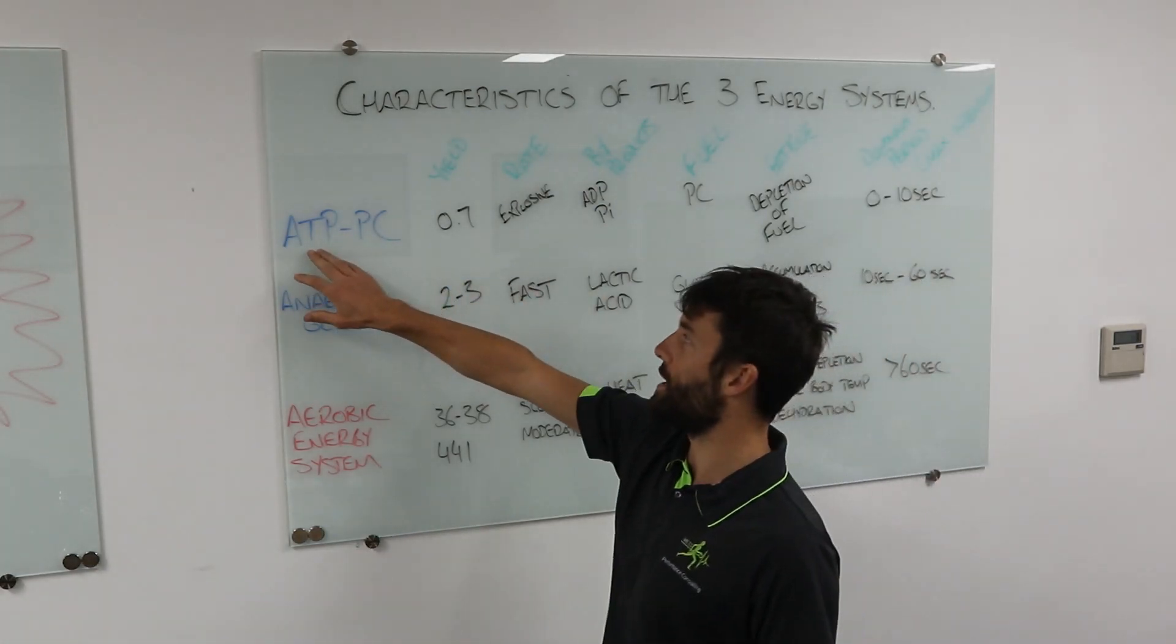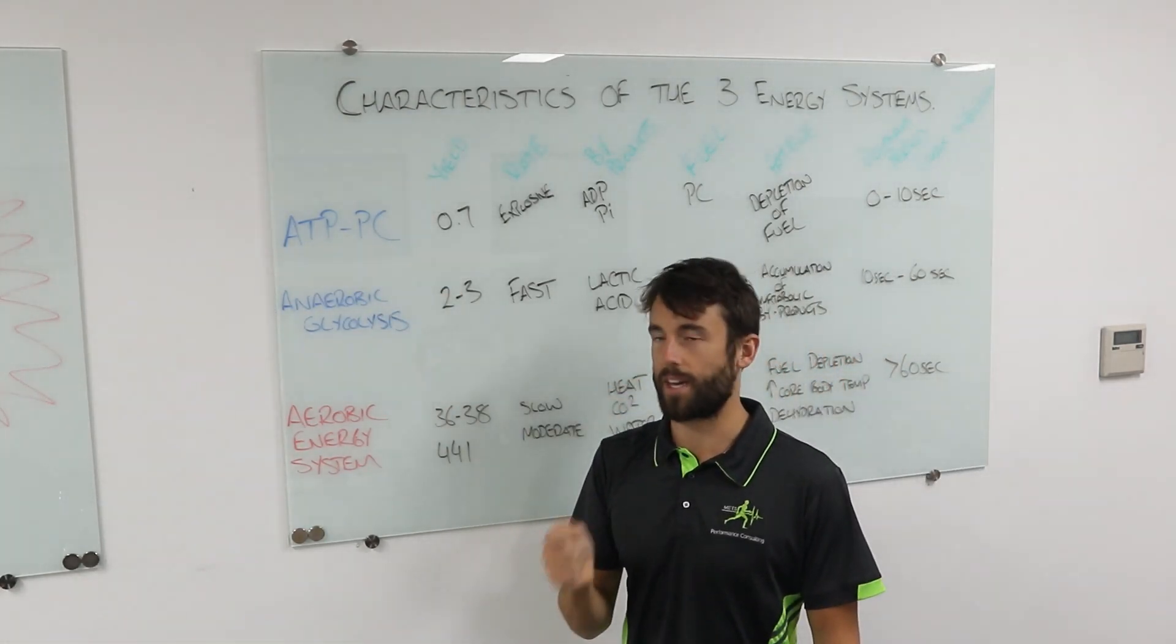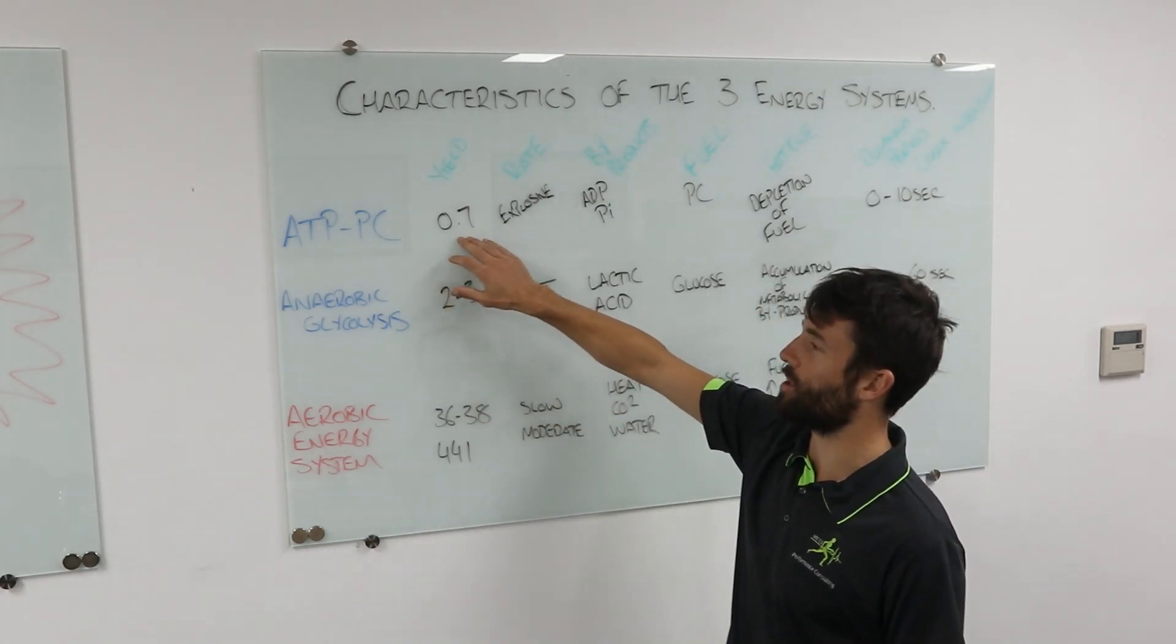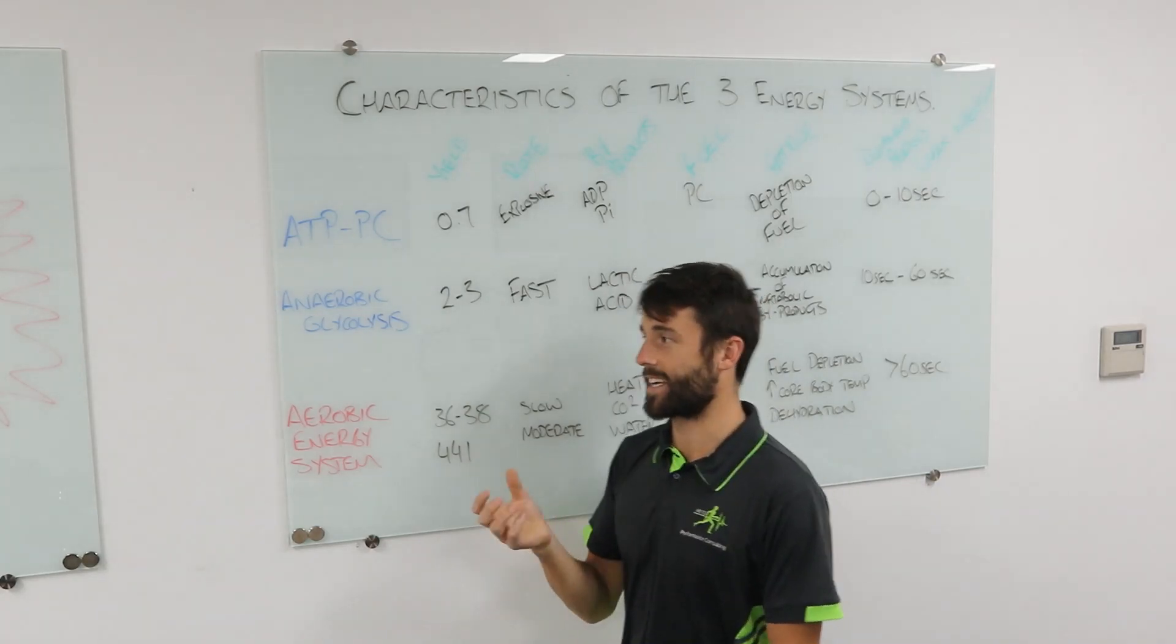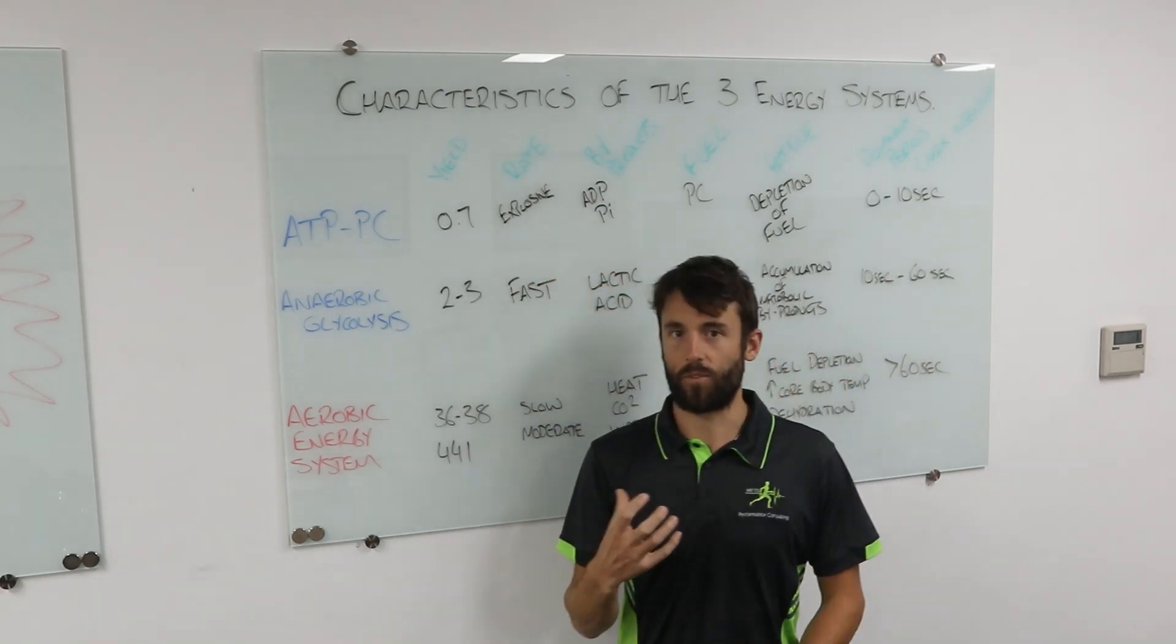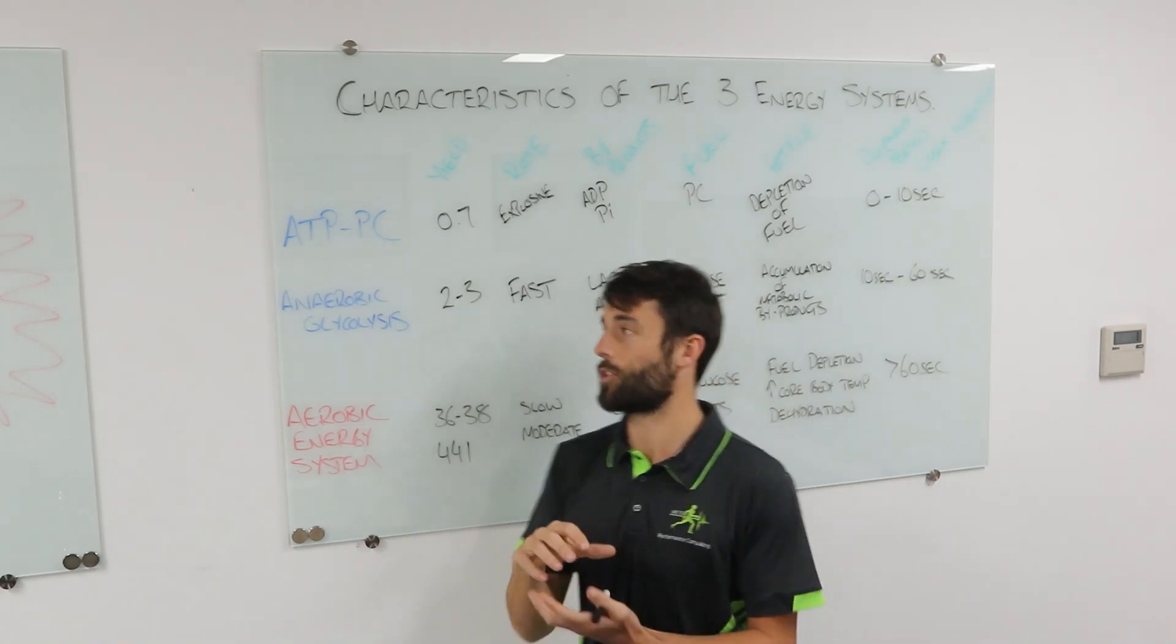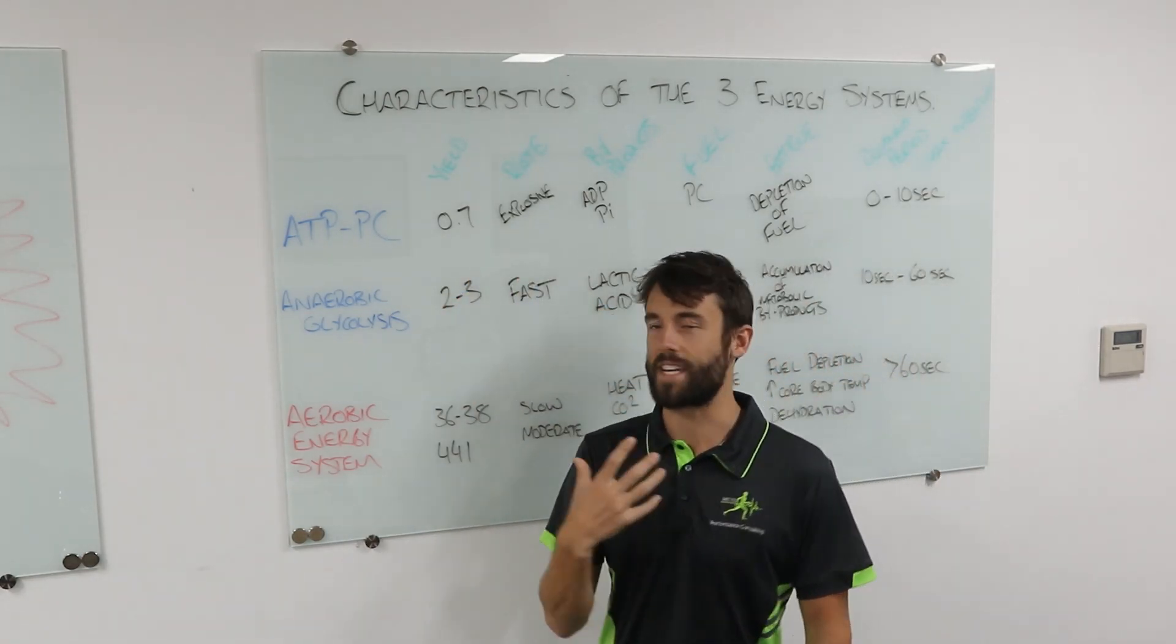First, we're going to look at ATP-PC. You might say ATP-CP. Phosphate creatine—here we can say PC or CP, that is the same thing. Yield: phosphate creatine will give us the smallest yield of all of our fuel sources. So we get 0.7 ATP molecules for each PC molecule that we are using as our fuel. You guys need to know less than one. 0.7 is the exact number. However, the rate of production is explosive, very very fast. Explosive, rapid—they are all good terms.